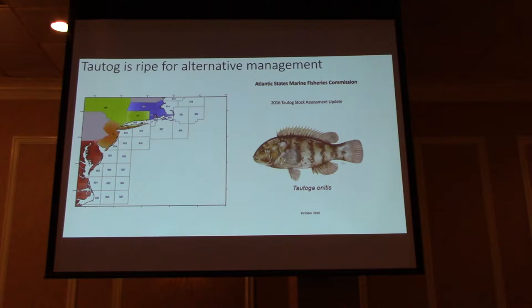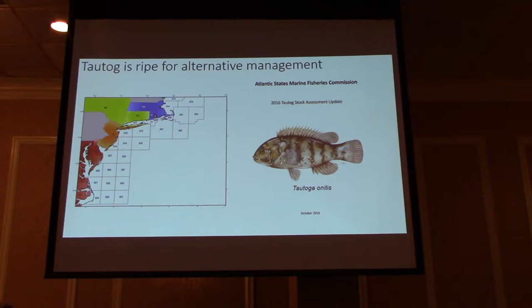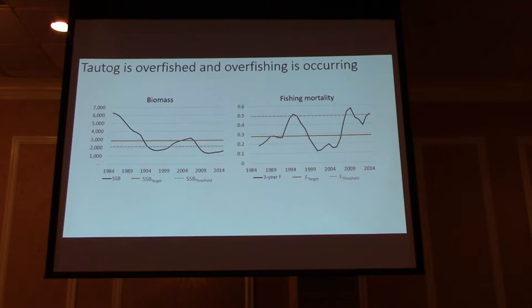My work so far has been using tautog as my model species, and tautog is ripe for alternative management. We started a few years ago and worked with the Atlantic States Marine Fisheries Commission to develop a Long Island Sound specific stock assessment. Prior to this work, tautog was managed as a single coastal species, but now it's been broken down into four regions — we broke out Long Island Sound as its own management region. What we found is that tautog is overfished and overfishing is occurring. The biomass is below target threshold values, and fishing mortality rate is well above our target value and most recently above our threshold value. In response, in 2018, management was changed to target a 20% harvest reduction.